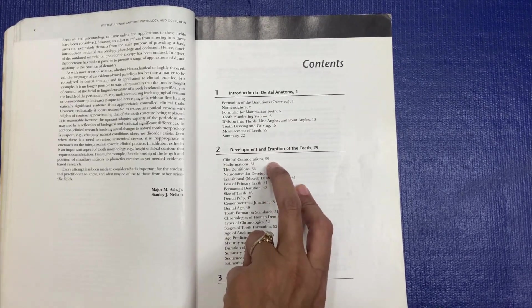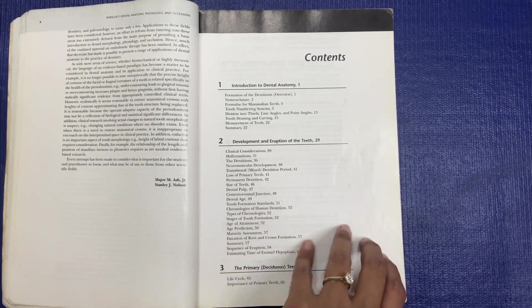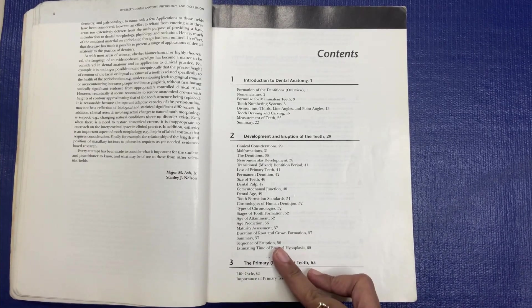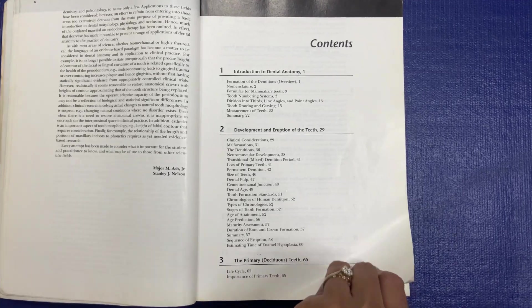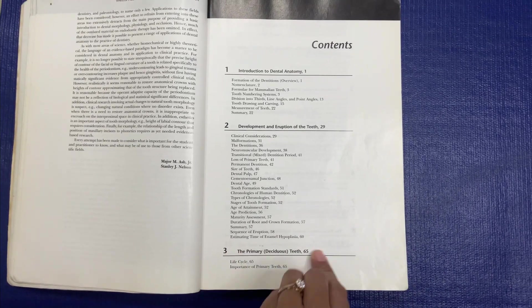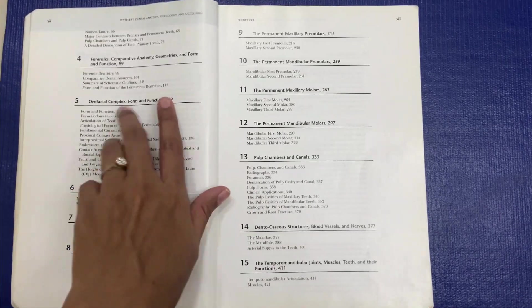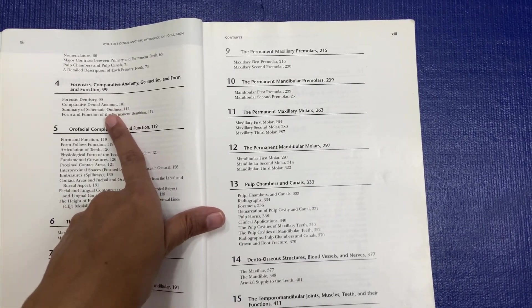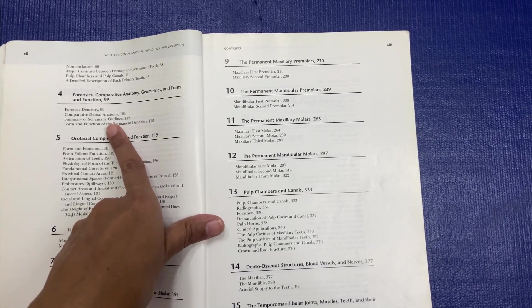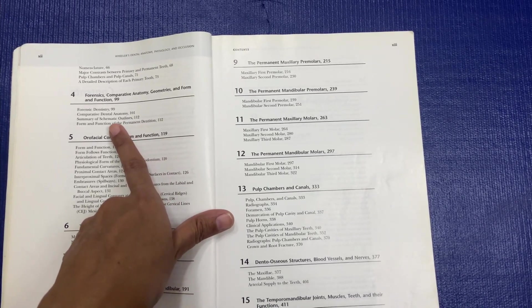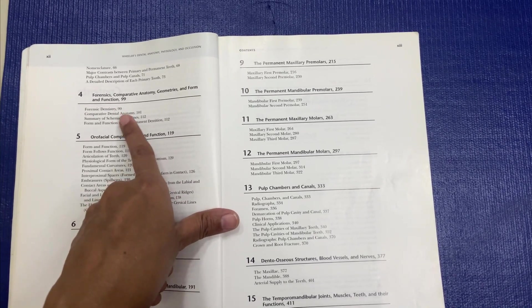The second is Development and Eruption of the Teeth, again a very important chapter for chronologies and everything. Then they have given about the primary dentition, so we need to know a little bit about the primary teeth.